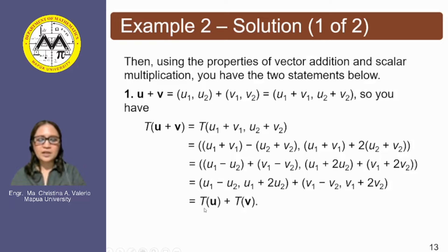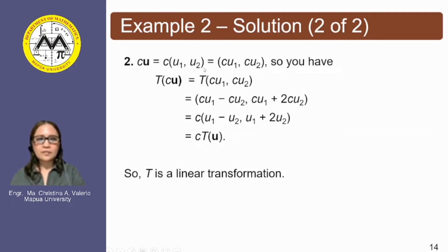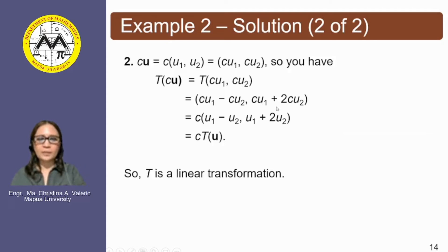Hence, the transformation of u plus v is equivalent to the transformation of u plus the transformation of v. For property two, we want to prove the transformation satisfies scalar multiplication. We have c times u equal to c times (u₁, u₂), giving components (cu₁, cu₂). So T(cu) equals T(cu₁, cu₂), which gives first component cu₁ − cu₂ and second component cu₁ + 2cu₂. Factoring out scalar c gives c times the vector (u₁ − u₂, u₁ + 2u₂), which is simply c times the image of vector u. Since both properties are satisfied, T is therefore a linear transformation.